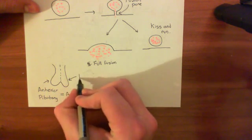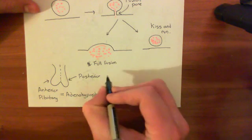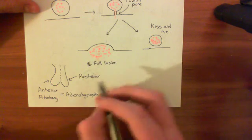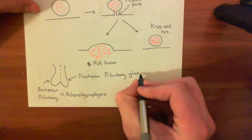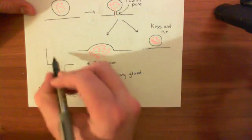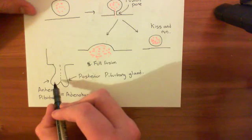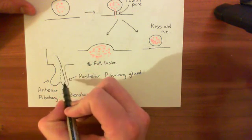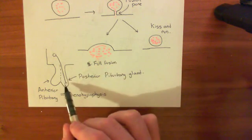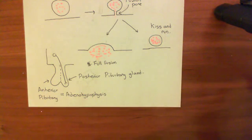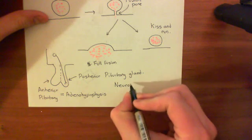Whereas the posterior pituitary gland produces far fewer hormones, and what it actually consists of is not cells which are producing hormone. Instead, it consists of the axon terminals of a bunch of neurons which have come down from nuclei in the hypothalamus above. So basically, the posterior pituitary is just loads of axon terminals of neurons which have their cell bodies up in the hypothalamus. These axon terminals release neurotransmitter into the blood as a hormone — sometimes referred to as a neurohormone.